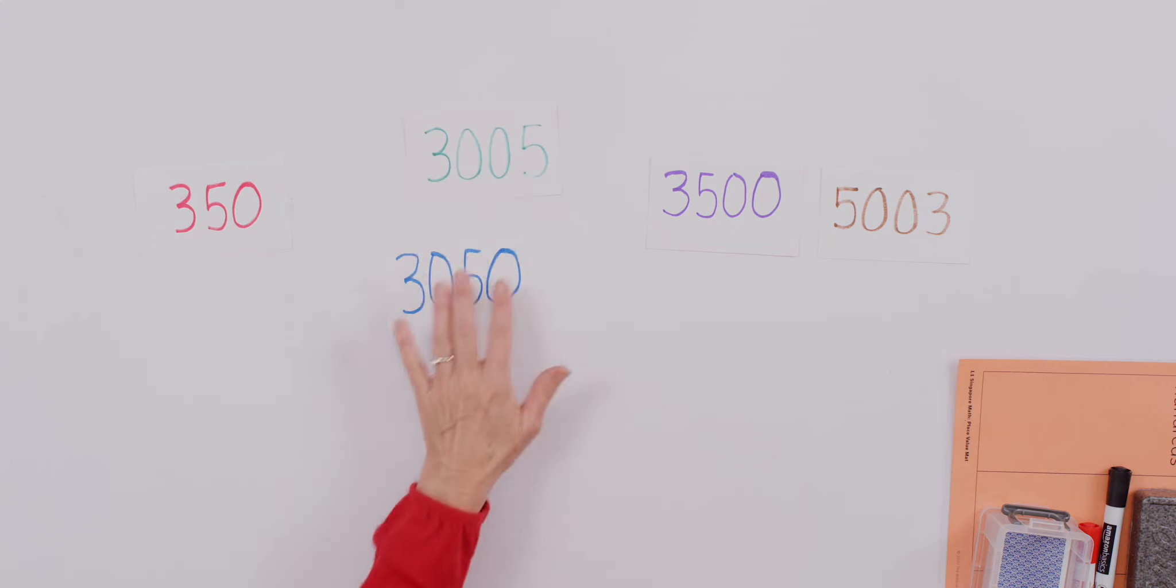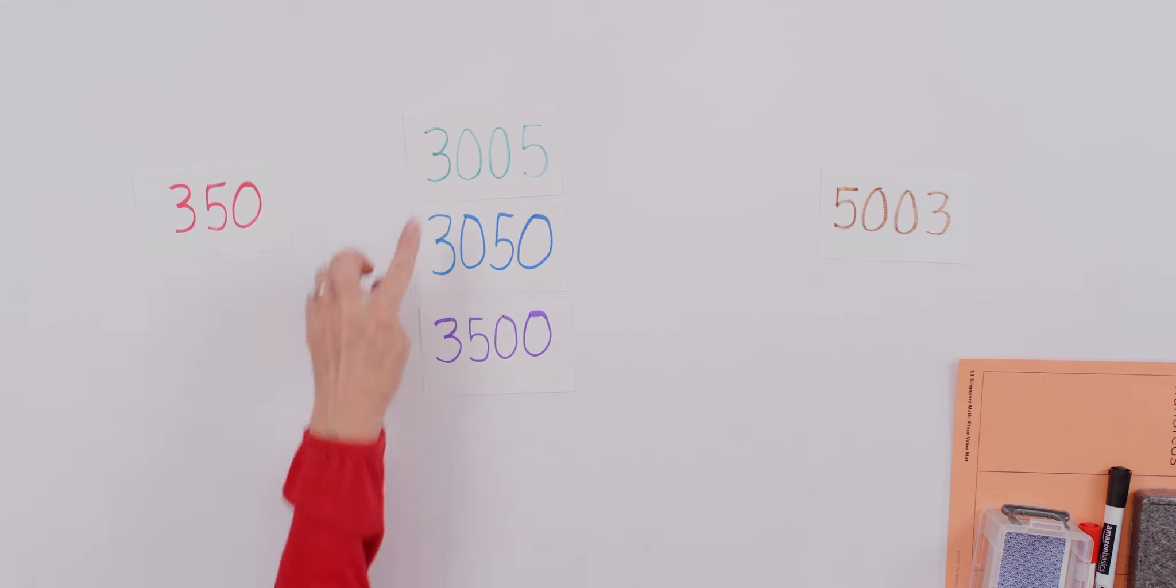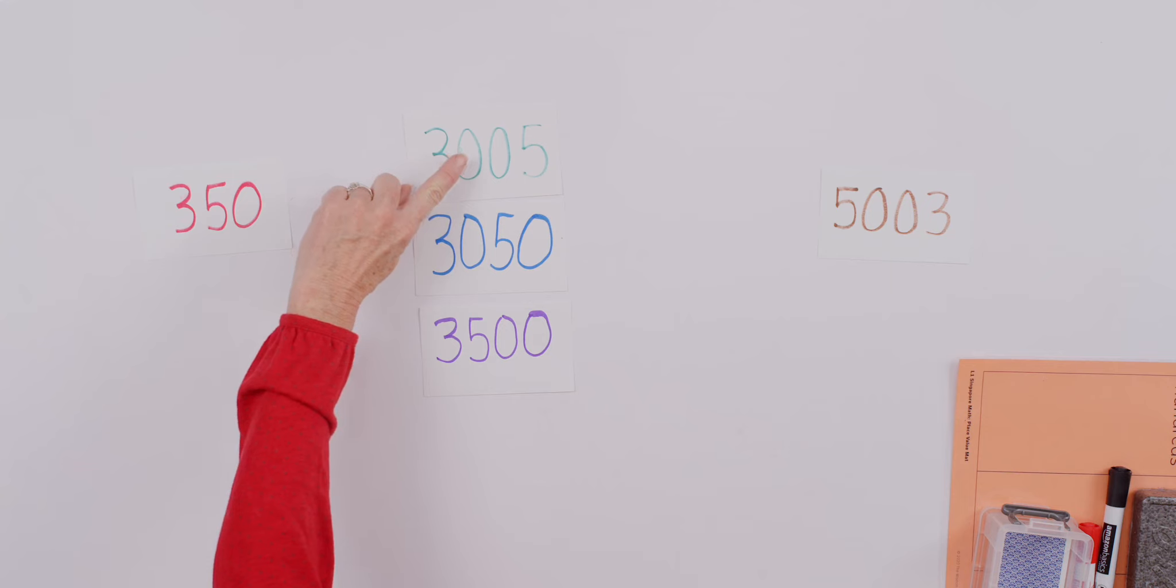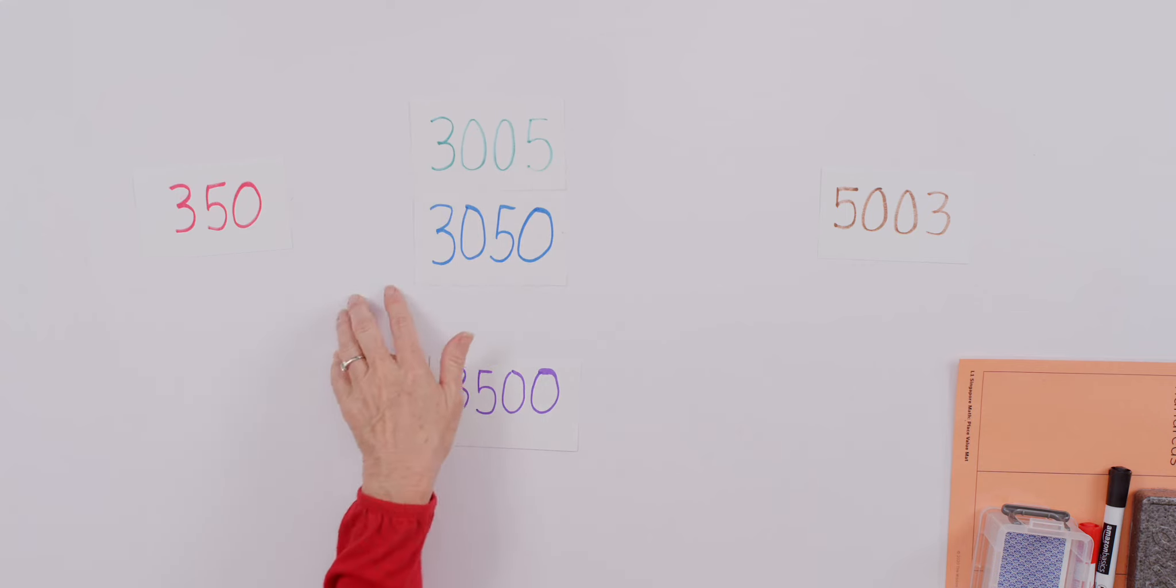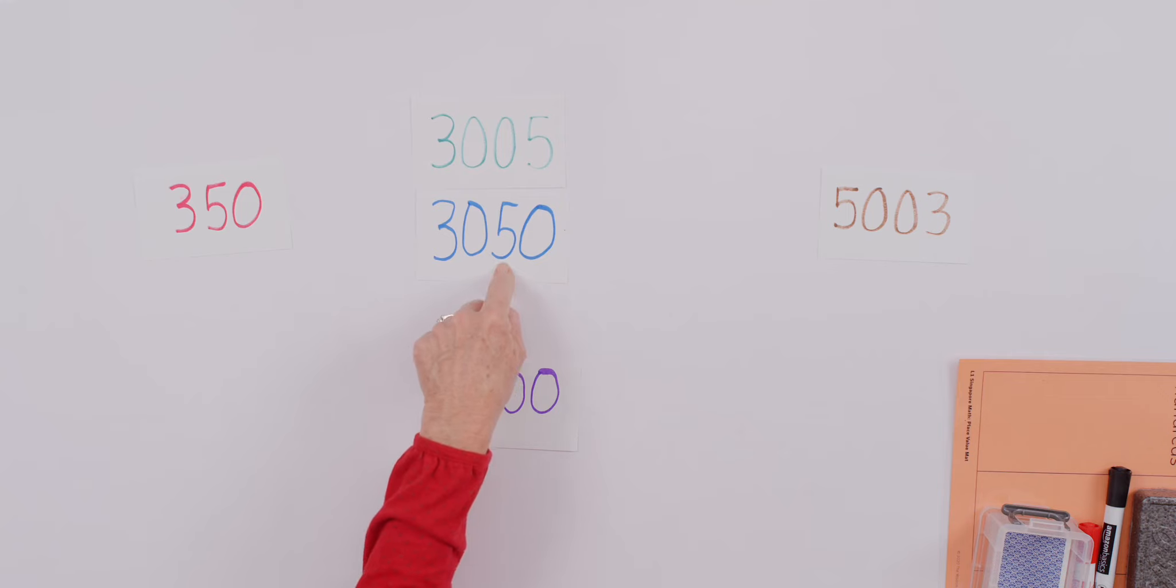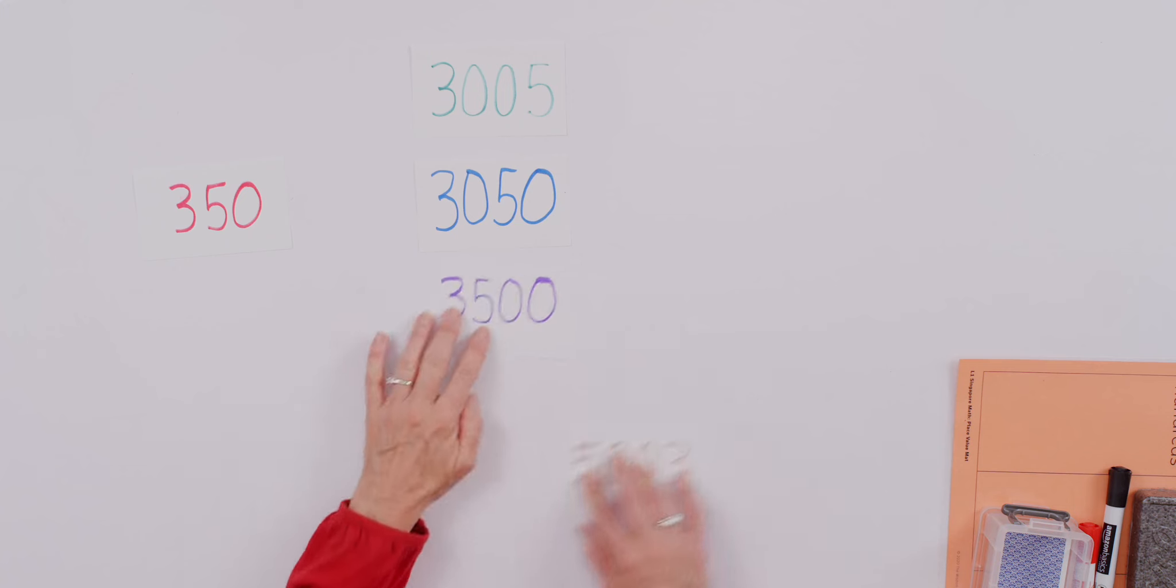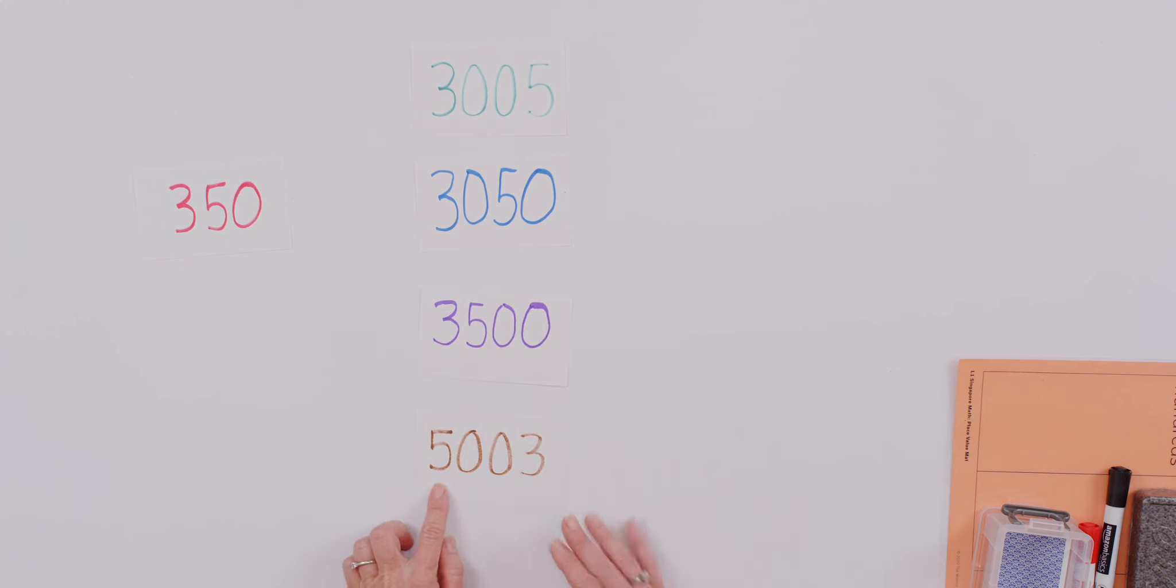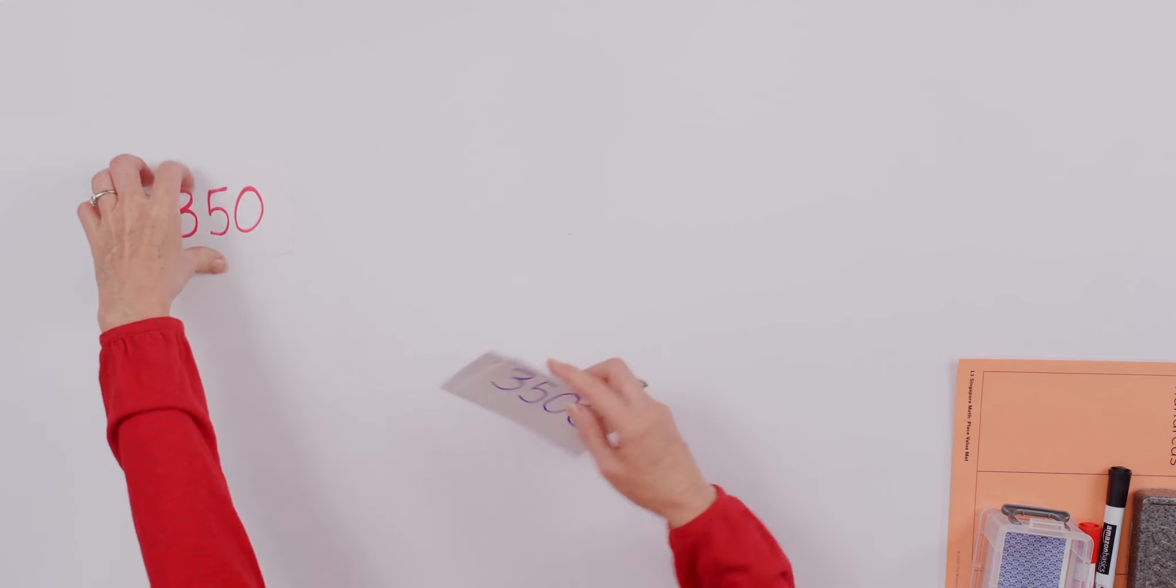For this number we get into the thousands, which is the same as the blue and the purple number. So we look to the next value column. We've got zero hundreds, zero hundreds, but here we have five hundreds. So we know this is larger than these two. And then again we'll look to the tens. Zero tens, but here we have five tens. That's why that's the next larger. And of course in this case, we have the thousands column, which is larger. And so that makes our 5003 the largest number of all. So that's just a little warm up you can do to be thinking about numbers and their different value columns.